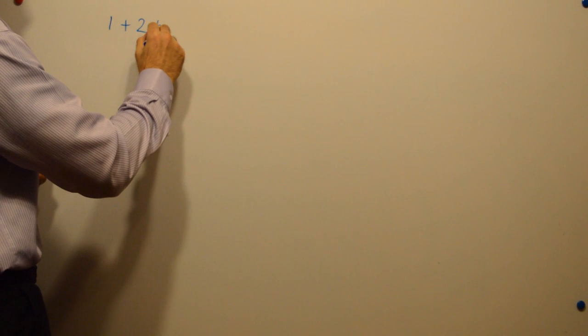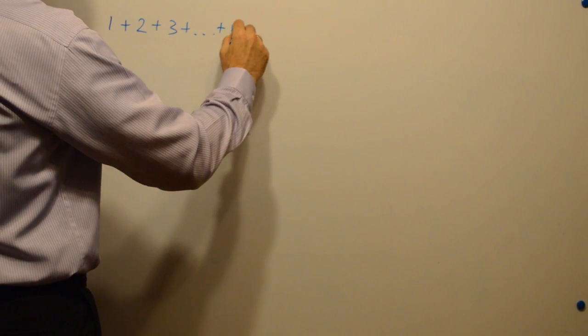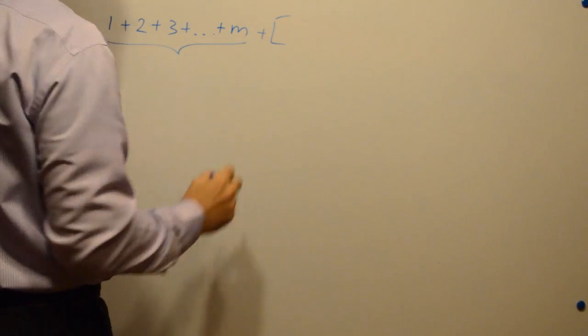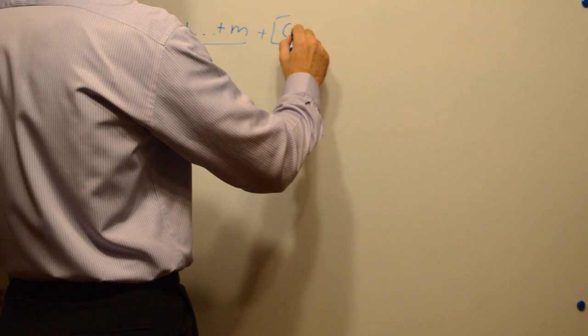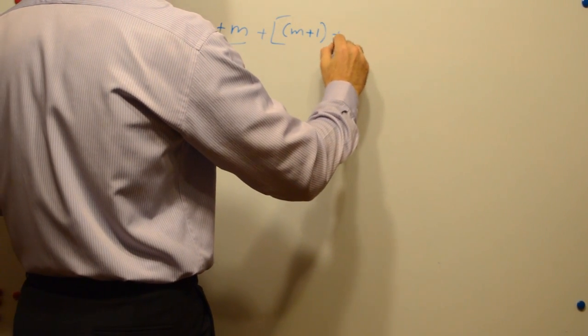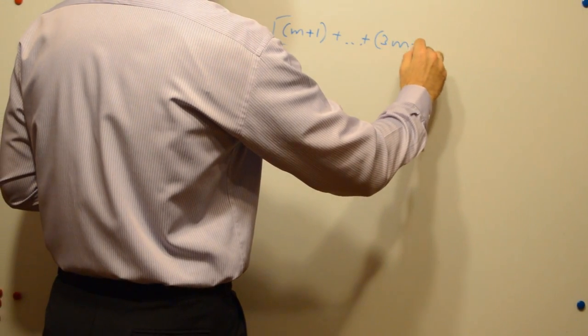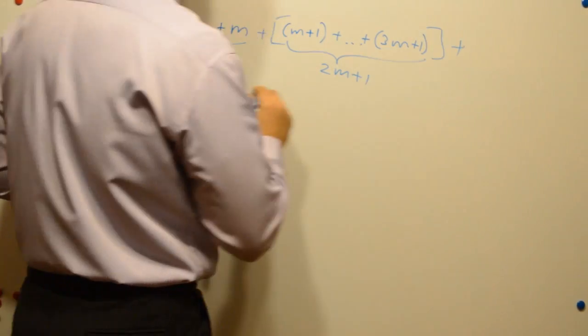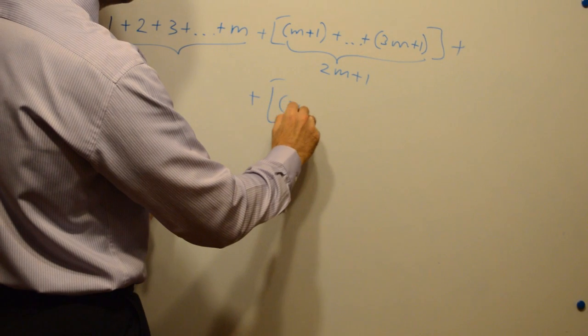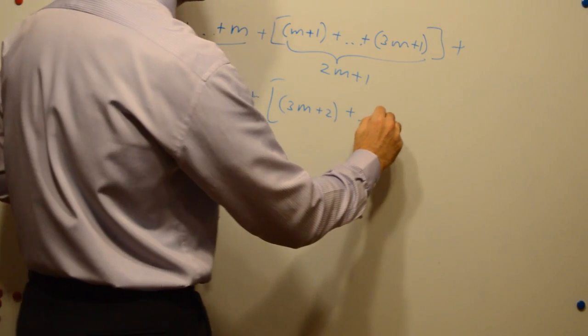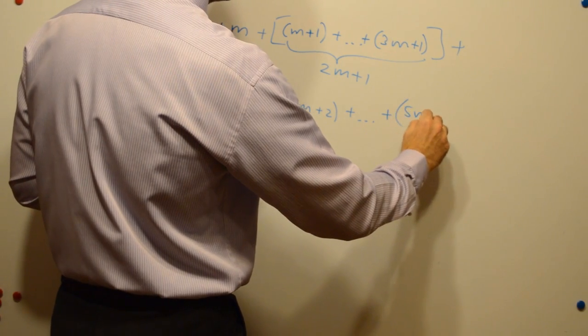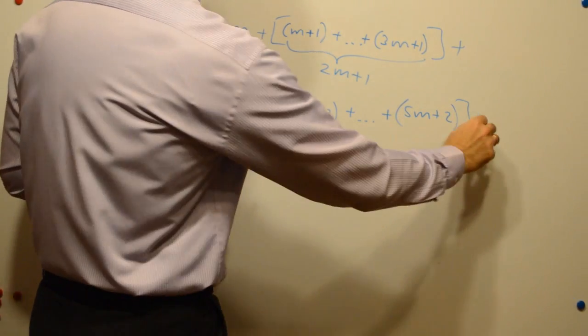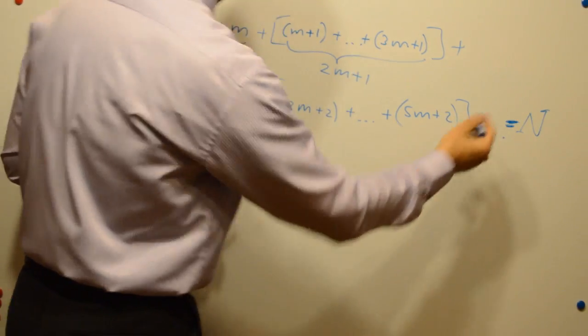And it's very interesting that in general we can show that if we leave ungrouped, let's say, m numbers. And then we group all other numbers in groups of 2m plus 1 numbers. And so on. It equals n.